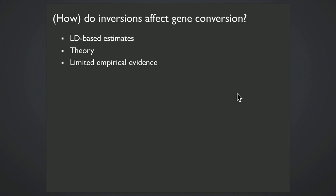So we have population genetic data and LD-based estimates telling us that gene conversion occurs within inverted regions, and we have theory telling us that this is evolutionarily important and that even low levels of gene flow can erode genetic differentiation over generations.